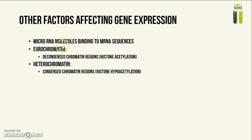We also have euchromatin, which is the part of chromatin loops that are decondensed, affected by histone acetylation. As a result of these decondensed chromatin regions, the enzyme can access the DNA bases more easily, and therefore more transcription can occur.